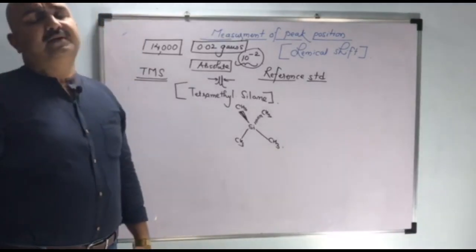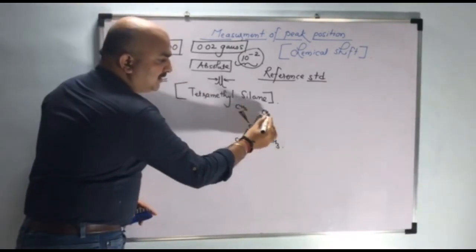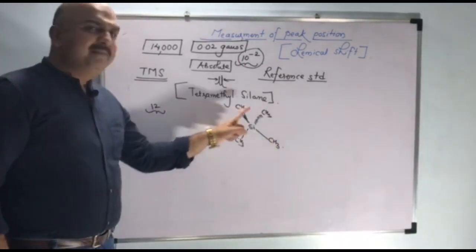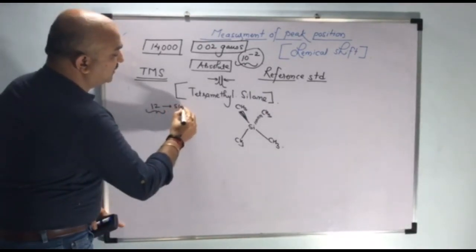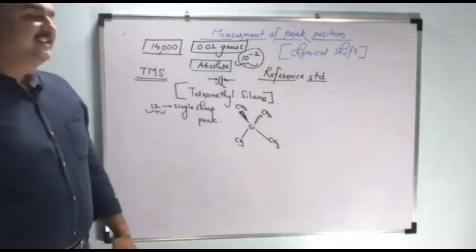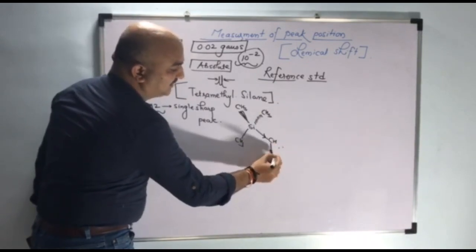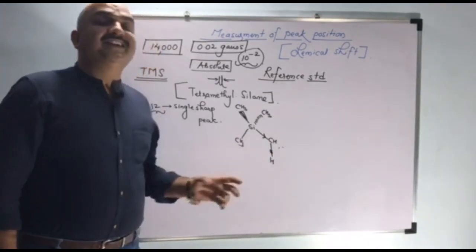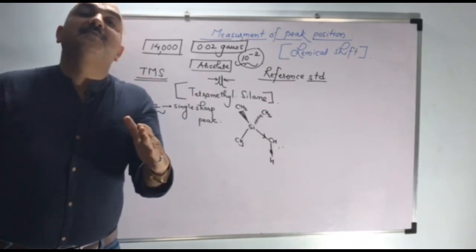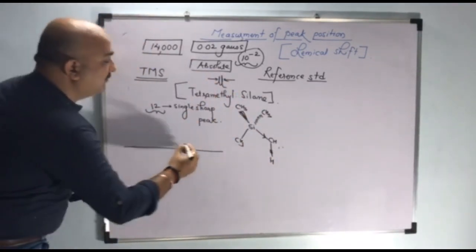Why have we chosen TMS as the reference standard? First, there are 12 protons in TMS and all 12 protons are identical — they will absorb the same magnetic field, giving a single sharp peak. Second, silicon is electropositive, so silicon gives electron density to carbon, and carbon gives electron density to hydrogen. The electron density around hydrogen increases, and as we know, if electron density around hydrogen increases, the induced magnetic field will be more, resulting in more shielding. So this proton will be maximum shielded.